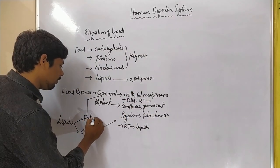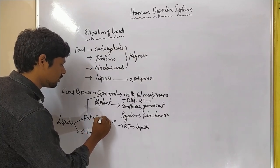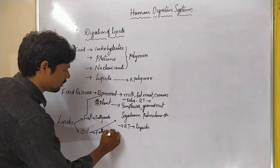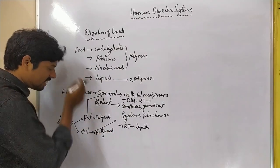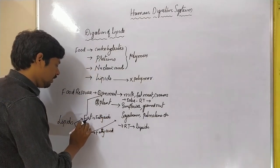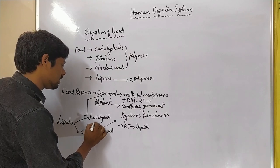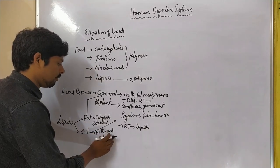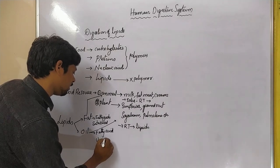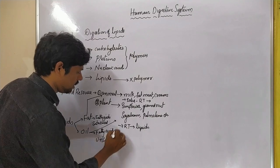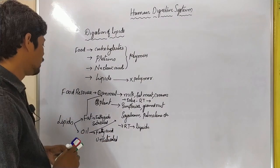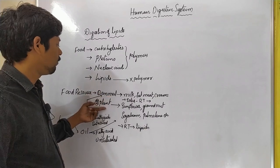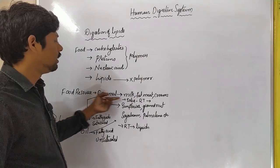Both fats and oils contain fatty acids. In animal fats, the fatty acids exist as saturated fatty acids, whereas in plant oils the fatty acids exist as unsaturated fatty acids. Fats and oils are both lipids, present in both animals and plants.